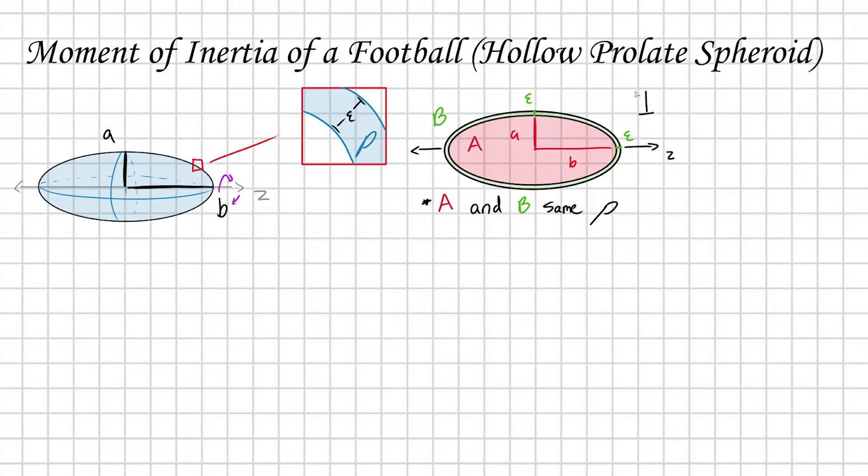By superposition, the moment of inertia of this total spheroid A plus B can be thought of as having some contribution from the inner spheroid I_A plus a contribution from the shell on the outside I_B. What we're after is just the B part - the moment of inertia of this shell, which is our football. So we have I_B equals I_(A+B) minus I_A.